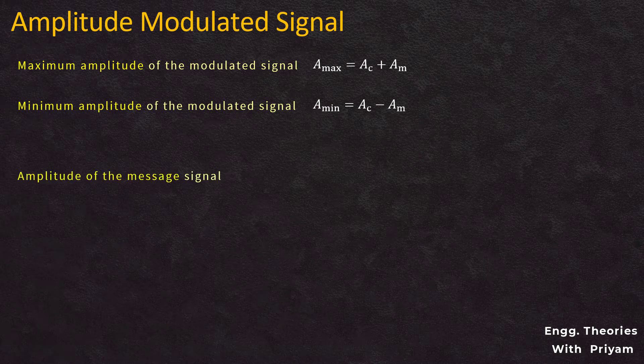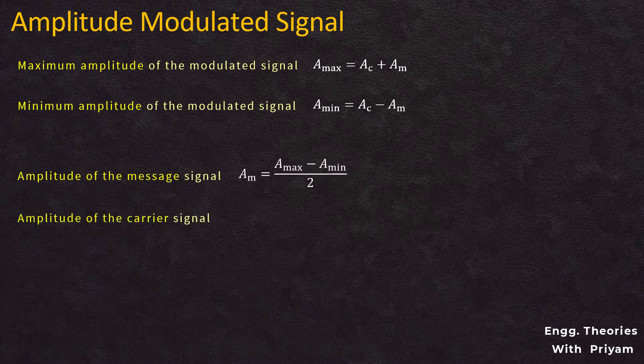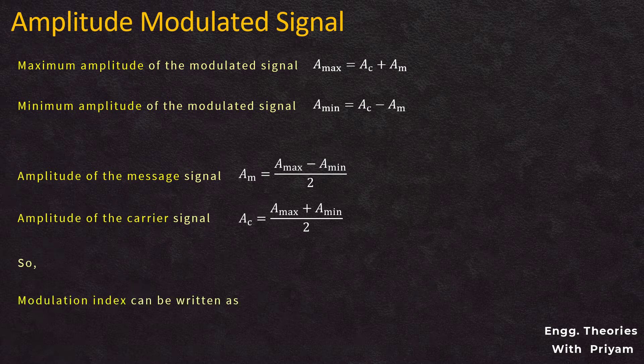The amplitude of the message signal am = (A_max − A_min) / 2, and the amplitude of the carrier signal ac = (A_max + A_min) / 2. Accordingly, the modulation index can be written as k = (A_max − A_min) / (A_max + A_min).